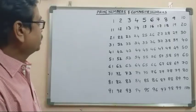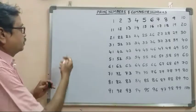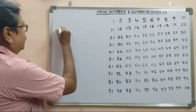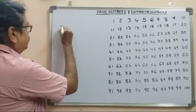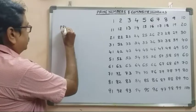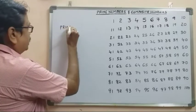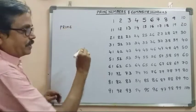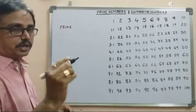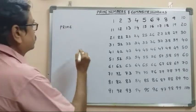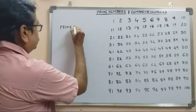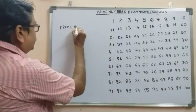So we will find out the prime numbers. Number one is neither prime nor composite.